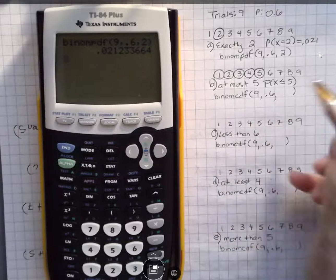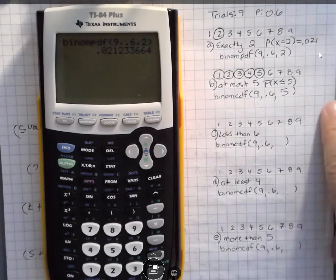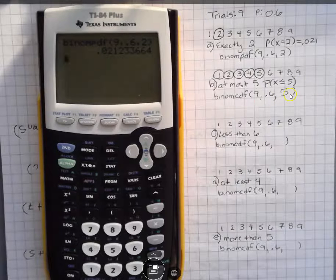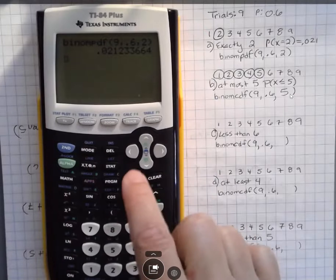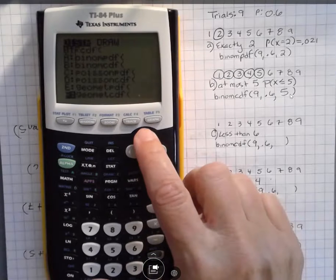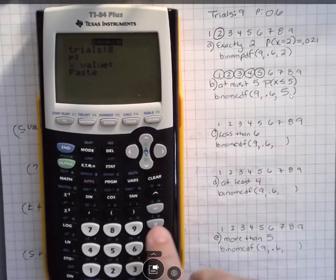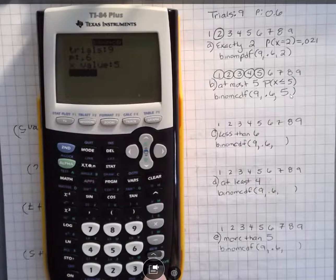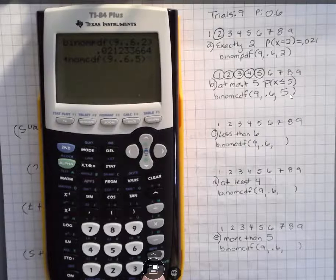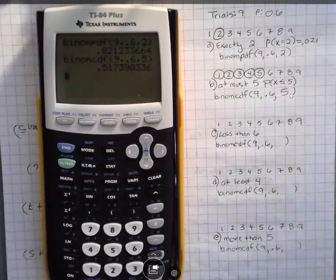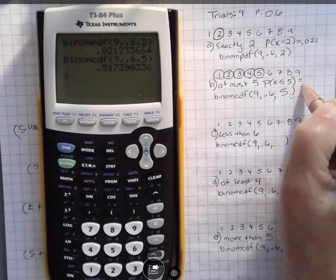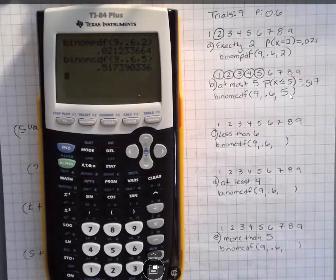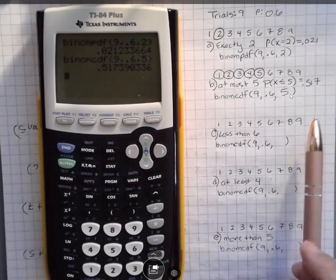So I'm going to use binomial CDF. I'm going to do second function VARS. This time when I go up, make sure you go to the CDF function. And then we have nine trials. We have a probability of 0.6. And we want to know what if it was 5 or less. You can hit enter a few times there. Hit it one more time, and you can get that probability. And that probability that we have here is 0.517 or about 51.7%. So very likely that five or less people in our group would have that.